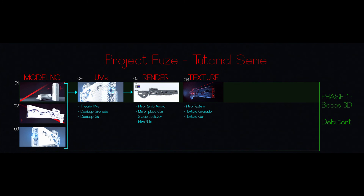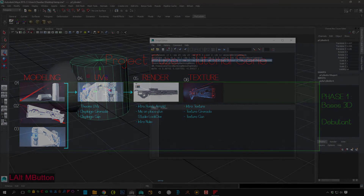It will be split into six parts: three on hard surface modeling, and others about unfolding UVs, Arnold Render, Coexcel 2.0 Texturing, and Nuke Compositing.